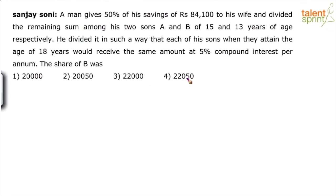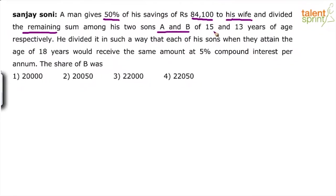Look at the question and try to understand it. A man gives 50% of his savings — what is his savings totally? 84,100. So out of this 84,100, he has given 50% to his wife and divided the remaining sum. If 50% is given to wife, the remaining 50% is divided between his two sons among his two sons A and B, who are 15 years and 13 years of age respectively.